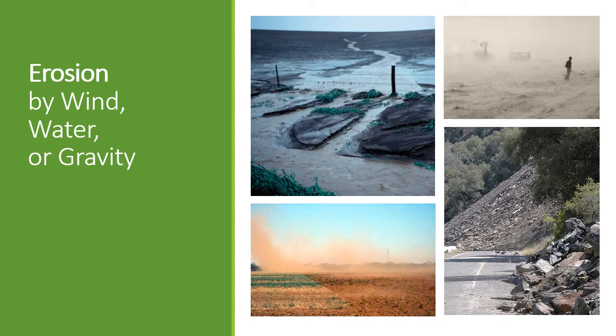Water erosion occurs in large rainstorms. Again, if you've got vegetation on the soil you can reduce that amount of erosion. It can be very severe in croplands, especially those that are in fallow. And then finally, gravity can move soil — we call that mass wasting, where a whole profile of soil moves down a hillside.